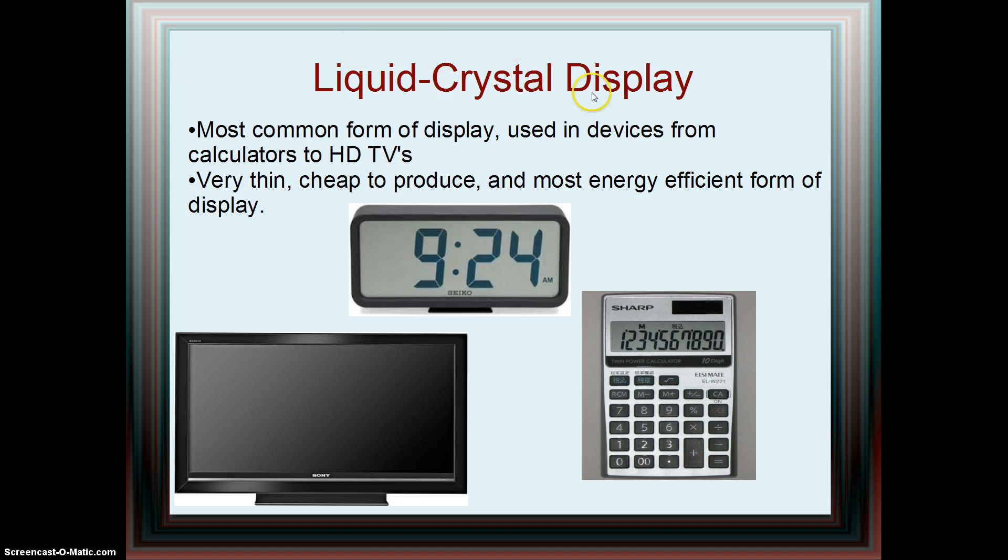LCDs are the most common form of displays in devices like calculators, HDTVs, clocks, watches, even aviator cockpit displays. They are this widespread because they are very thin, they can be cheap to produce, and they are the most energy efficient form of display.